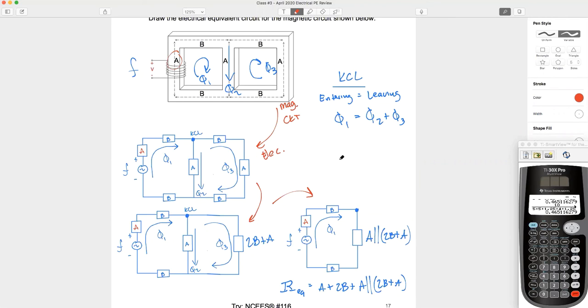All right. Any questions here? Notice you can treat it, remember, just like Ohm's law. If V equals I times Z, magnetomotive force equals Webers times reluctance. So you can even find the magnetomotive force from here to here by multiplying this flux one by this equivalent reluctance right here. All of your KCL and KVL rules will all apply.